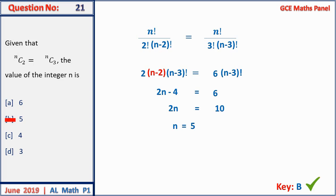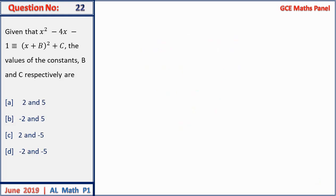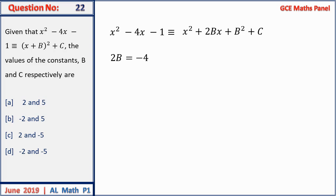Question 22: given x² − 4x − 1 is identical to (x + b)² + c, find b and c. Comparing x coefficients: 2b = −4, so b = −2. For the constant term: b² + c = −1, so 4 + c = −1, giving c = −5. Answer D.